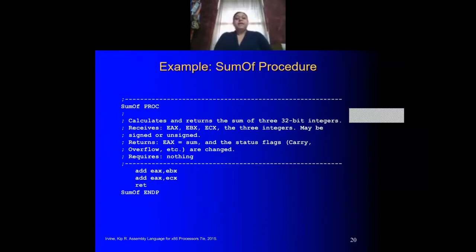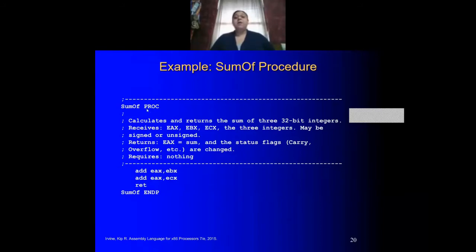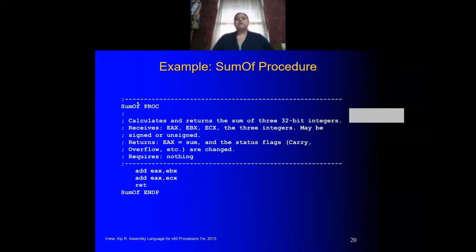Here we have an example of a procedure that adds numbers. The name is SUM-OFF — that's the name of the procedure. Notice that it's followed by PROC. This is a directive, not an instruction. So P-R-O-C and the keyword E-N-D-P are both directives. You see them also with the procedure MAIN — it says MAIN PROC and MAIN ENDP. Those two are directives that are letting you know something is happening.